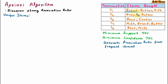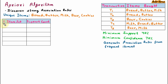The unique items are bread, butter, milk, beer, and cookies. Bread, butter, and milk are repeated across multiple transactions, as are beer and milk. From this dataset, we have five unique items.